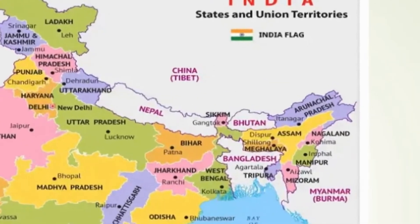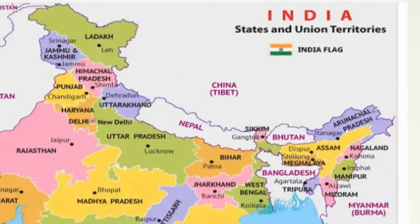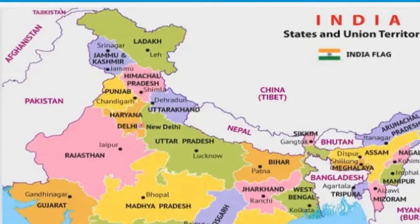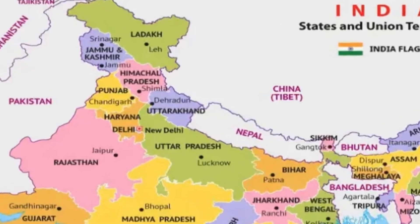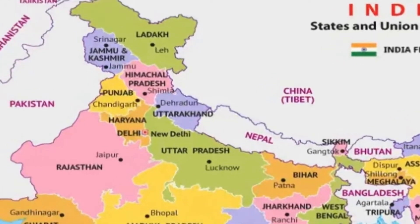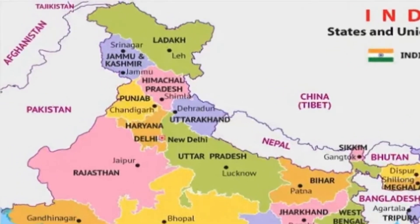This is the latest map after the making of Jammu and Kashmir and Ladakh as Union Territories. So we will start today with North India — how to identify Northern India. Now you have Ladakh and Jammu and Kashmir separated as two Union Territories.